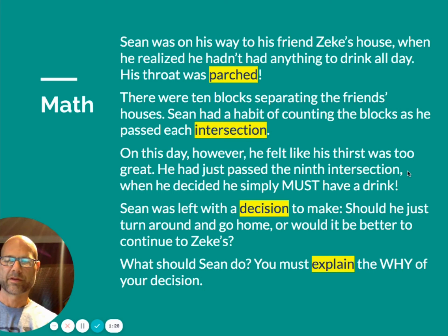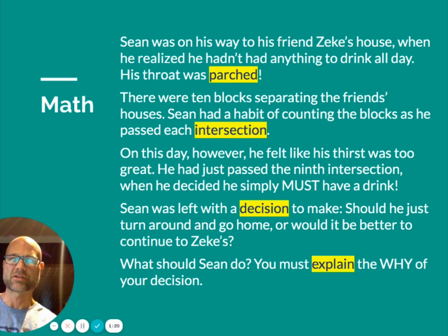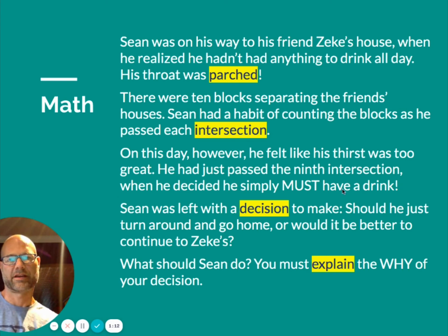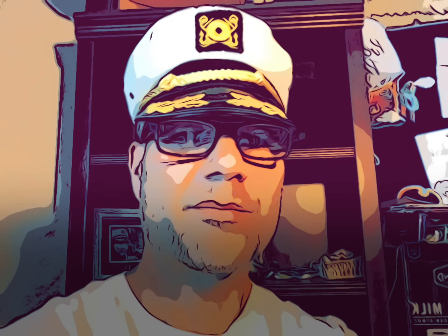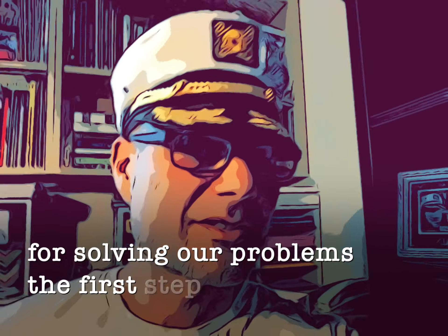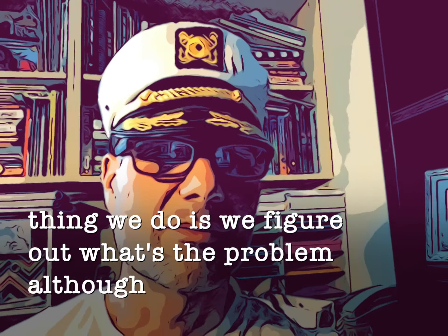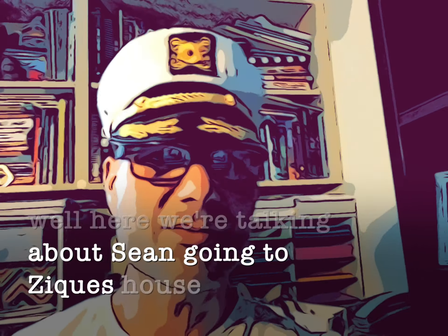There were 10 blocks separating the friends' houses — so between Sean's house and Zeke's house there are 10 blocks. It could be 10 city blocks, but basically it's a unit of measure and there are 10 of them. Sean had a habit of counting the blocks as he passed each intersection. An intersection is where one or two streets cross each other. Here's a picture of one, and here is one illustrating city blocks — you can see from intersection to intersection would be considered one block.